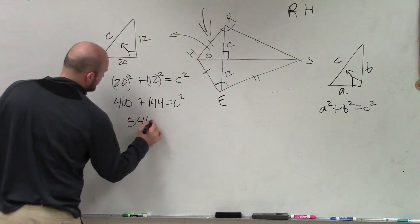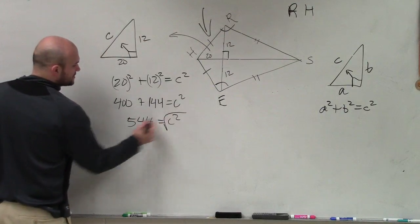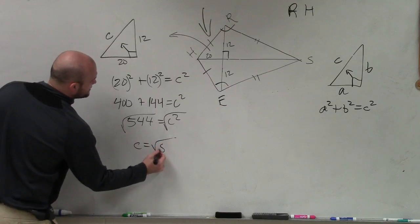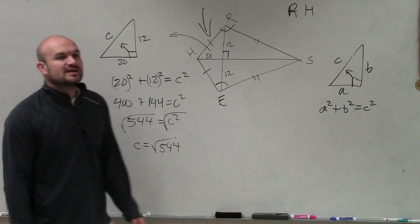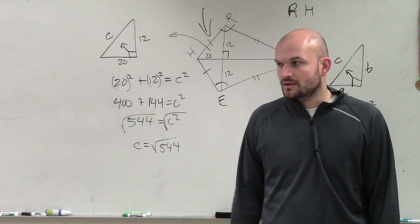So therefore, we have 544 equals C squared. Now, to solve for C, you're going to have to take the square root on both sides. And at this point in time, we have not talked about simplifying radicals. So I'll allow you guys to leave your answer as the square root of 544.